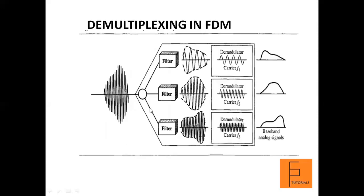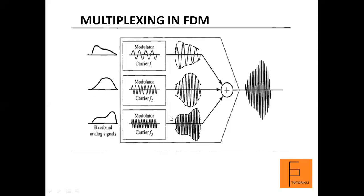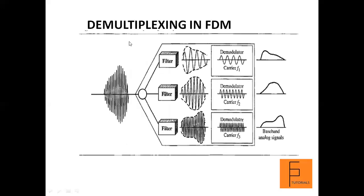At the receiving end, the composite signal is given to three filters — one for each output device. Each filter decomposes the multiplexed composite signal into its constituent component signals. After filtration, the constituent component signals are generated. There are three filters because there are three baseband signals coming from three input devices, and logically there will be three output devices — so each output device needs a filter as well as a demodulator.